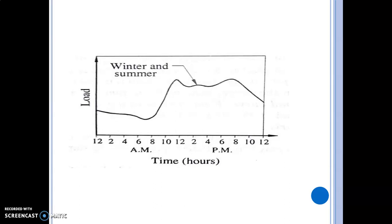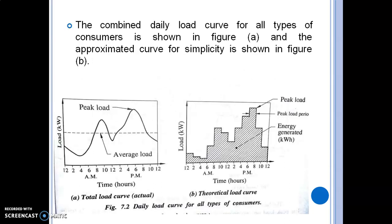The combined daily load curve for all types of consumers can be defined together. From this combined load curve, we can identify the peak load condition — the time duration during which the maximum load occurs. The peak load period can be identified from the combined daily load curve.